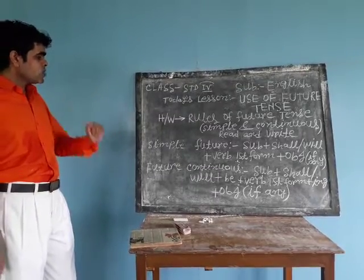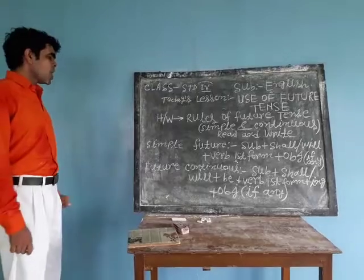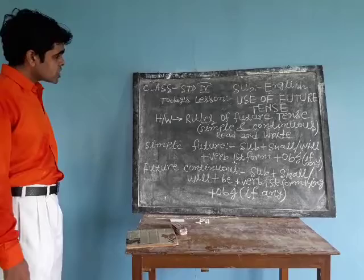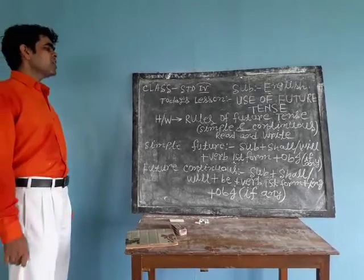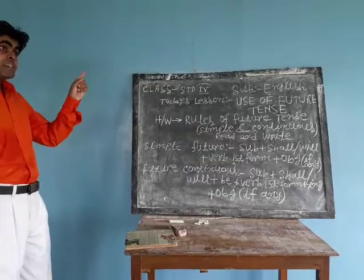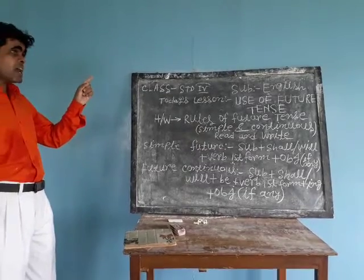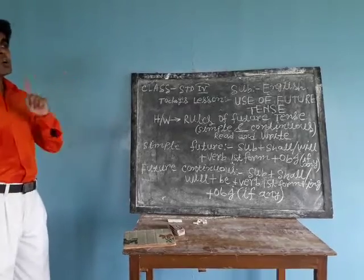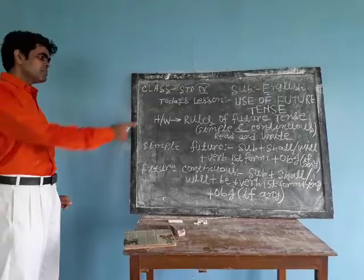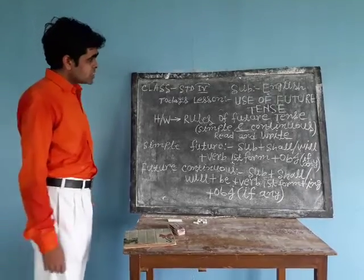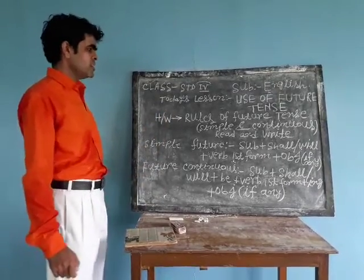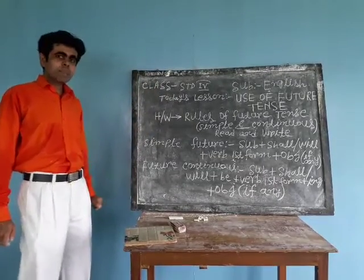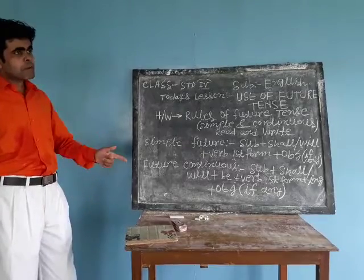Now we are going to learn the rules of simple future and future continuous. Simple future: subject plus shall or will. In simple present and simple past there is no need of a helping verb, but in future tenses we use two helping verbs — shall and will. First person uses shall, and second and third person use will.